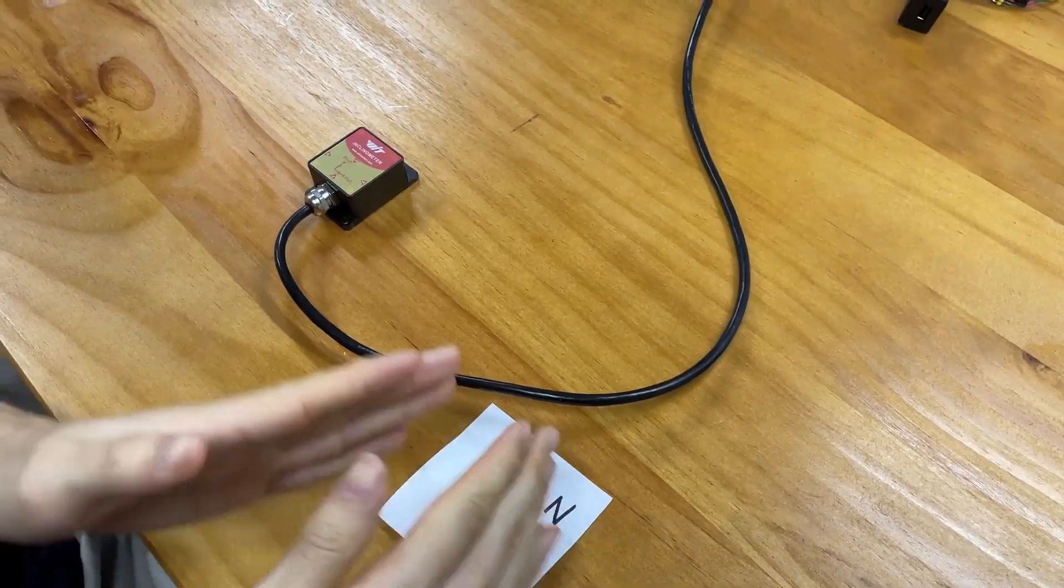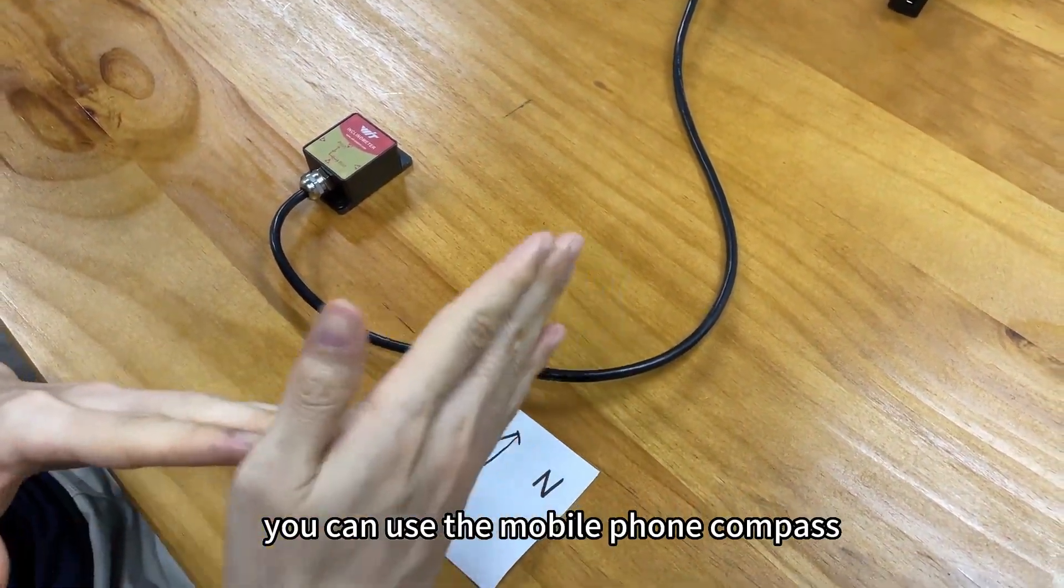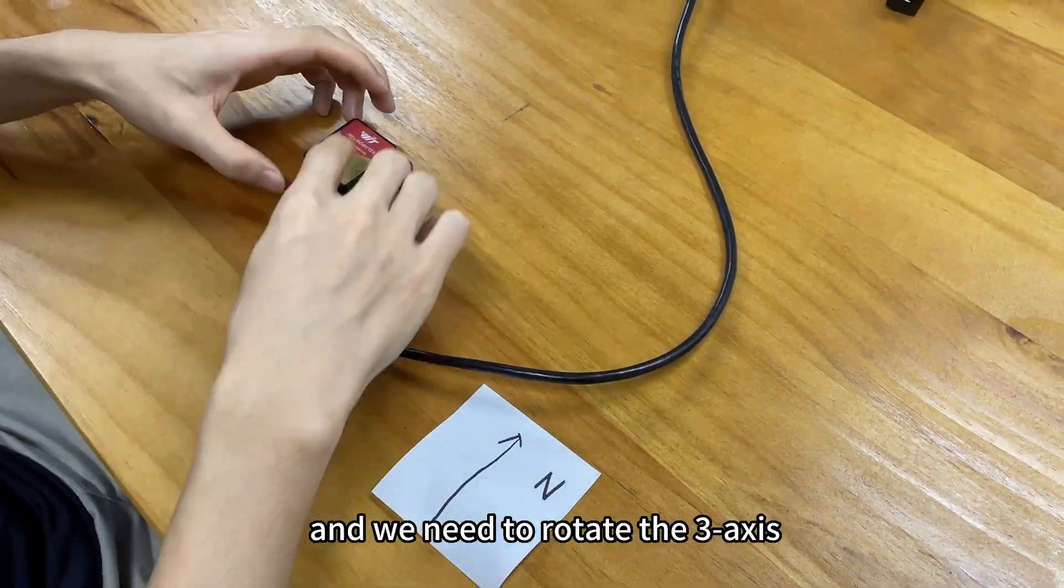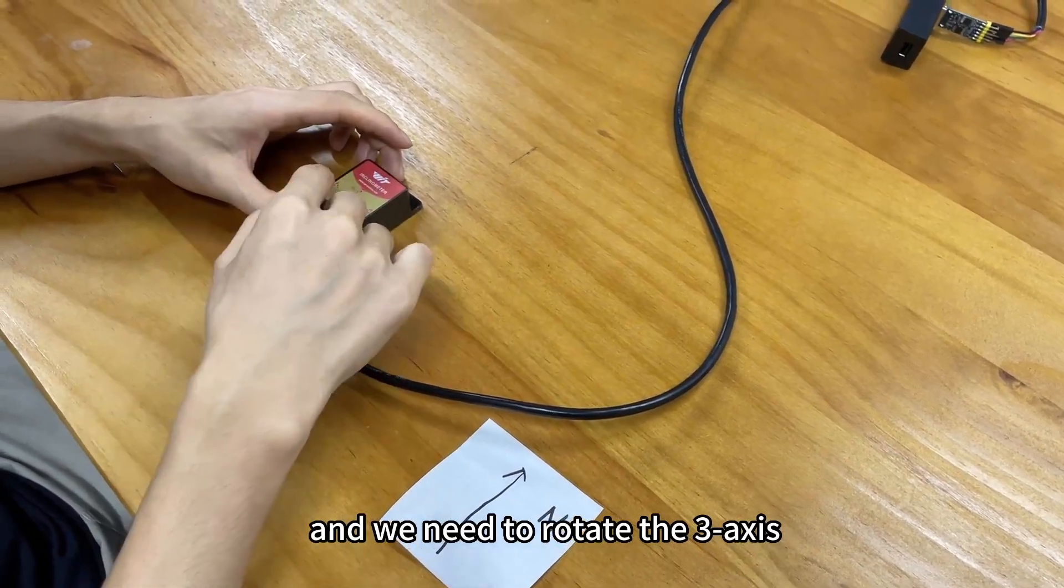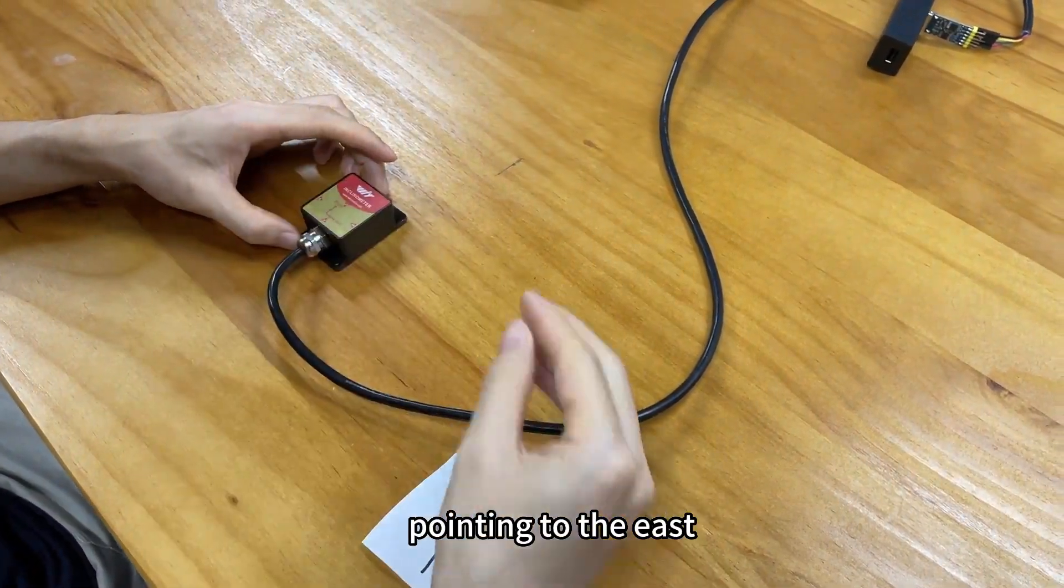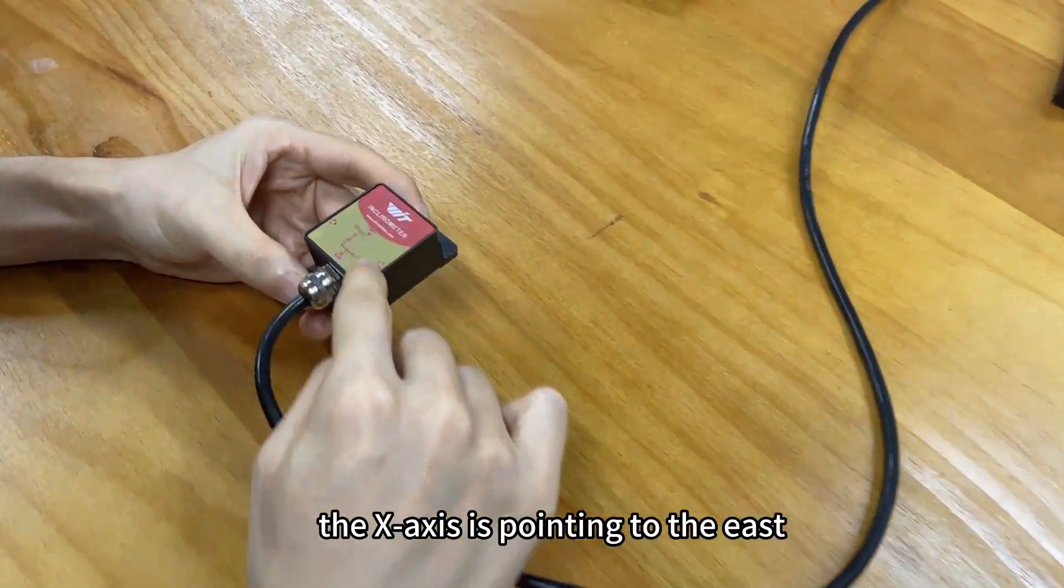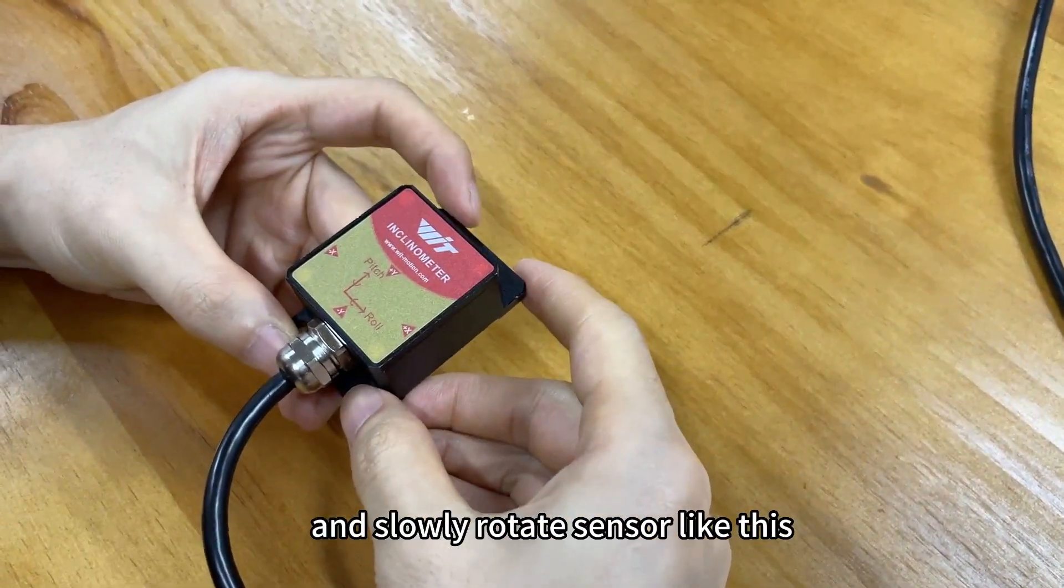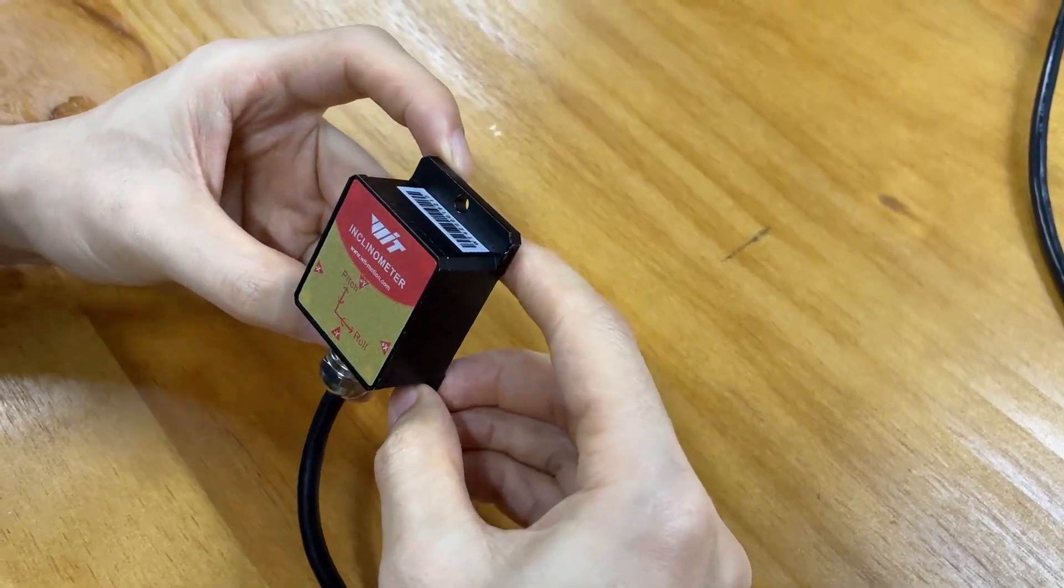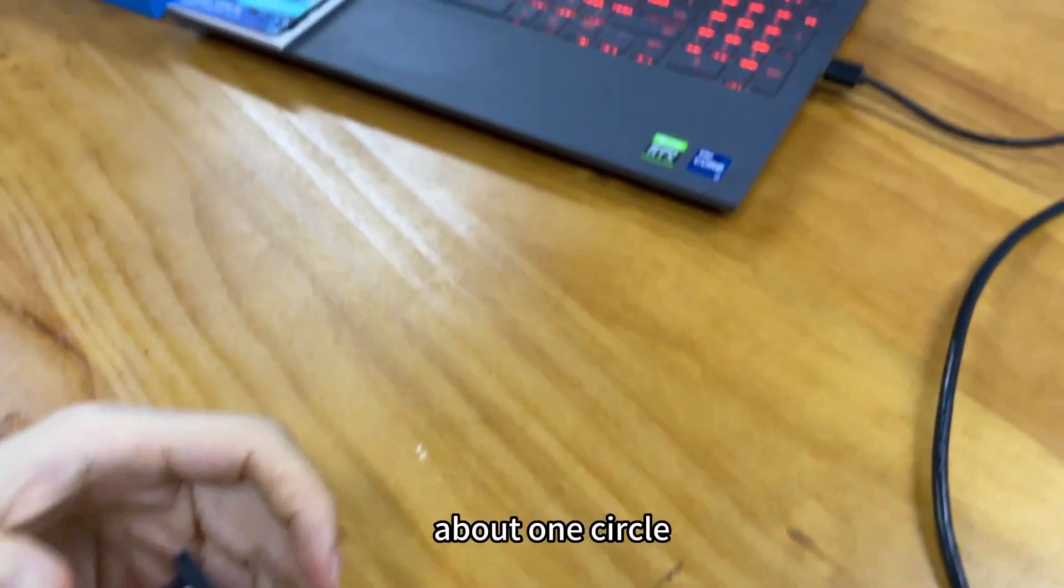Before calibrating, you need to also make sure the sensor's direction is pointing to the north. You can use the mobile phone compass. We need to rotate the three axes pointing to the east. Let's start it. Okay, the X-axis is pointing to the east, and slowly rotate the sensor like this, about one circle.